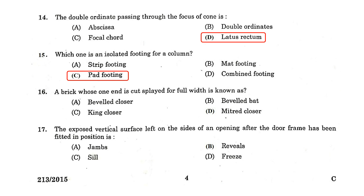A brick whose one end is cut splayed for full width is known as a mitred closer. The exposed vertical surface left on the sides of an opening after the door frame has been fitted in position is known as reveals.